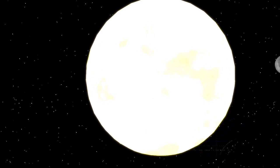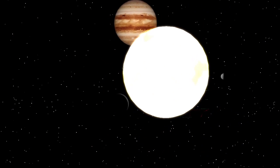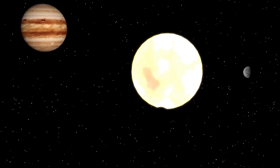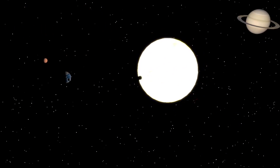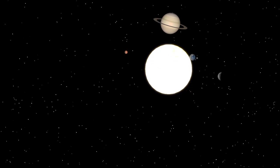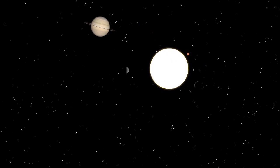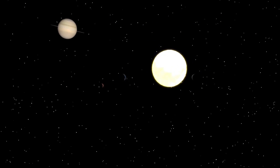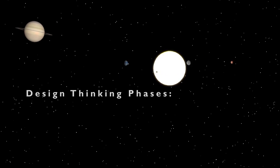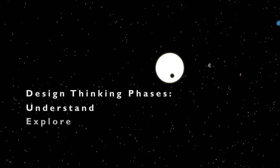Design Thinking is a highly regarded methodology used in design, engineering, and business fields to promote innovation. As shown here, design thinking consists of seven interrelated phases. The first three are understand, explore, and define.